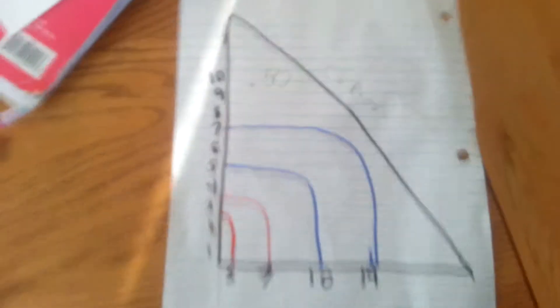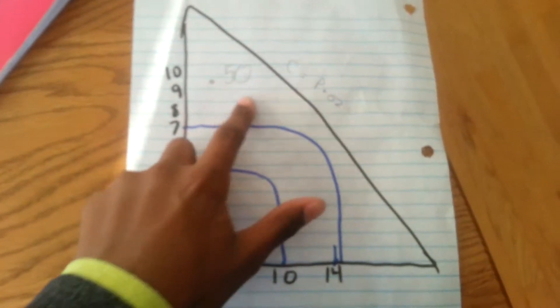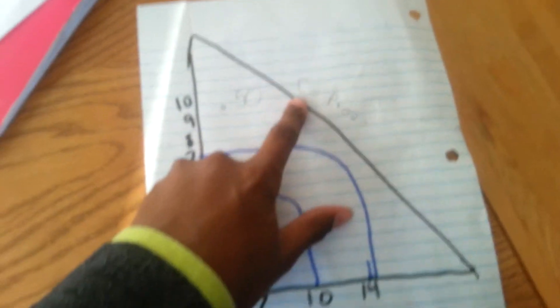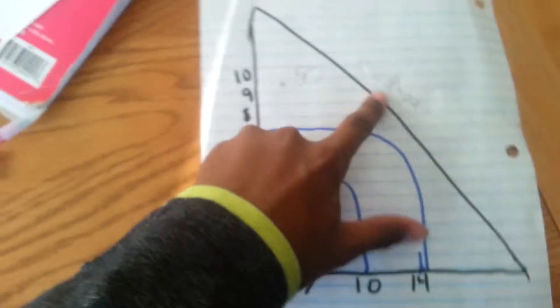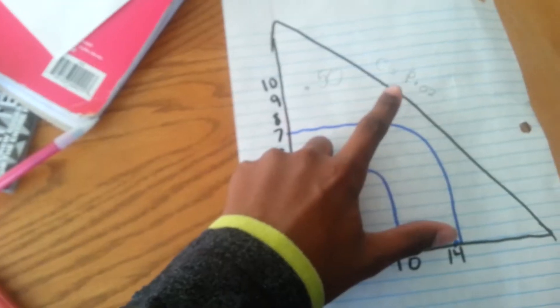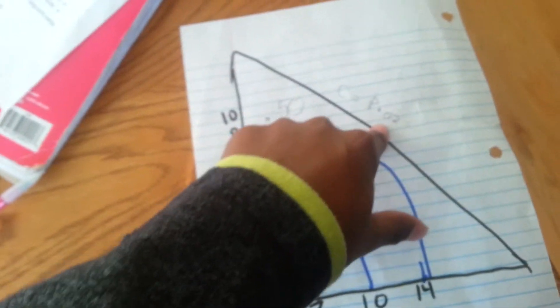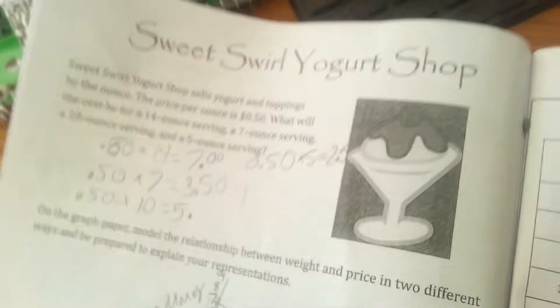Like this. We have to multiply 50 cents. And our equation is cost equals price times ounce. That means price per ounce equals the cost.